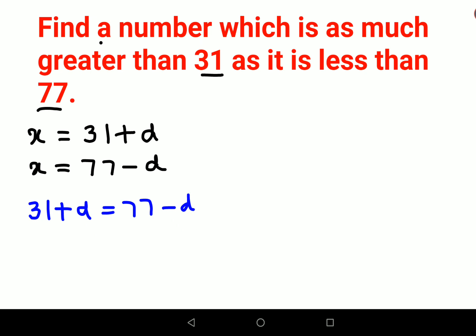Here we will shift the d on the other side so we have 2d, and then we have 77 minus 31. So to find the value of d, we do 2d equals 77 minus 31 which is 46, so the d value is 23.